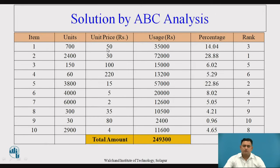So, 700 multiplied by 50 gives 35,000. Similarly, the second item has 2,400 units costing 30 rupees per unit, giving 72,000. We calculate costs for all other items in the same way, then take the summation of all costs. The overall summation is 2,49,300.